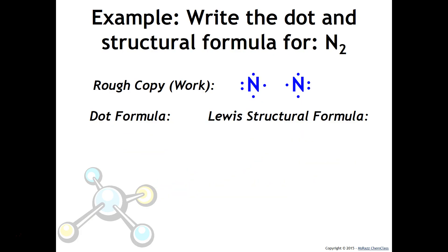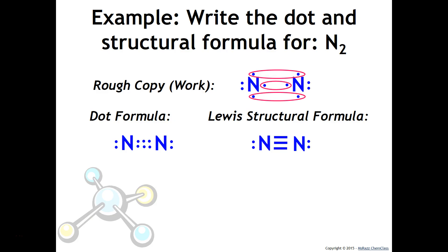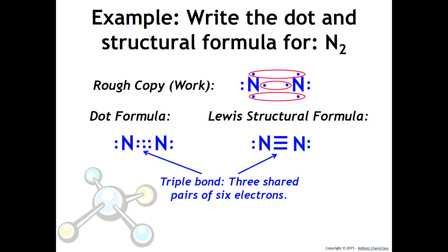For nitrogen, write each nitrogen with its five valence electrons. Each nitrogen wants to have eight, so it's three short — meaning it needs to make three bonds. It'll bond here, here, and here. The dot formula will show that arrangement, and the Lewis structural formula will have lines instead of dots between the two atoms. As you might expect, this is a triple bond — three shared pairs of six electrons.